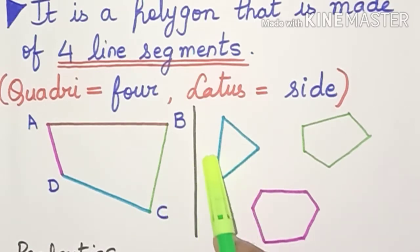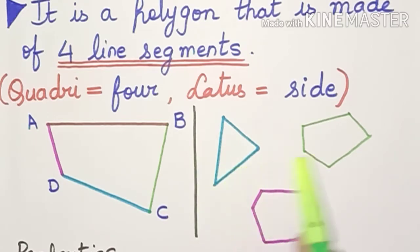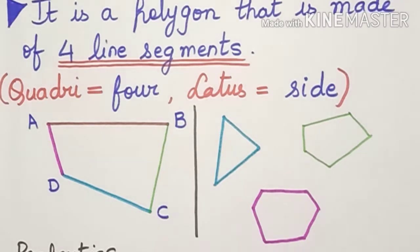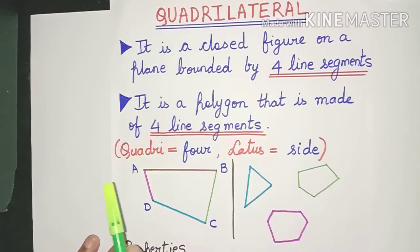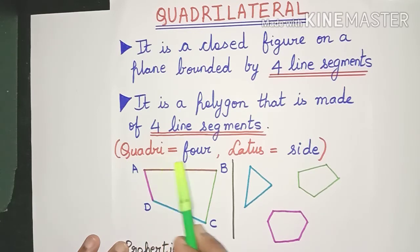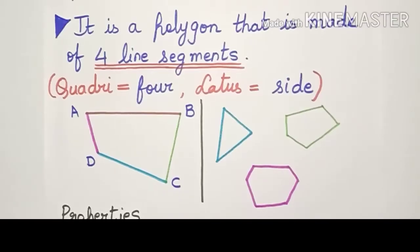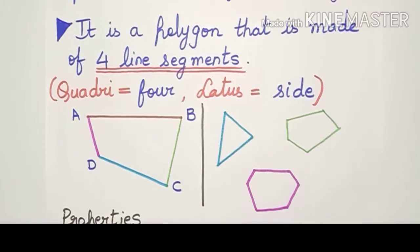On the other hand, if you look at these figures over here, this one has three sides, this figure has five sides and this has six sides. So these are definitely not quadrilaterals. A quadrilateral can also be said to be a polygon made up of four line segments. It is easy to remember because quadri means four and latus means side. So quadrilateral means four sides.